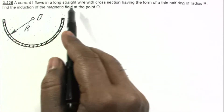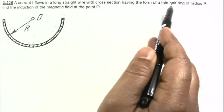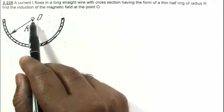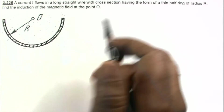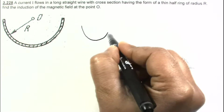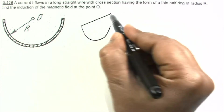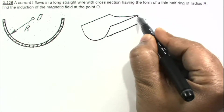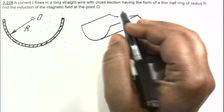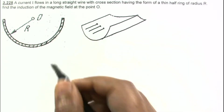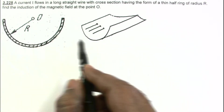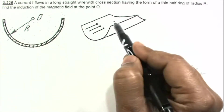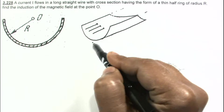In this question, a current i flows in a long straight wire with cross-section having the form of a thin half ring of radius R. We have to find the induction of the magnetic field at the point O. The 3D structure of this ring is such that from a cross-sectional view, the total current i is flowing through it, and the wire is of infinite length.